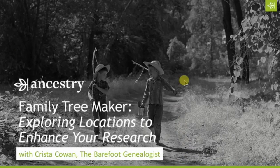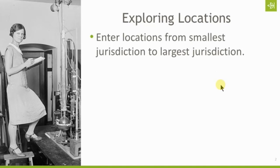Let's talk first about some genealogical standards as they relate to locations. The first thing you want to make sure you do on a consistent basis is that you enter your locations from smallest jurisdiction to largest jurisdiction. It depends on where your research takes you, but typically in the United States that's going to be a city, a county, and then a state. Some places don't have a county — there are independent cities throughout the U.S. Louisiana doesn't have counties, they have parishes. Always record the event location consistently from smallest jurisdiction to largest jurisdiction.